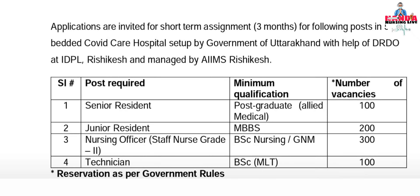There are many vacancies: Senior Residents require a postgraduate allied medical qualification, with 100 vacancies. Junior Residents require MBBS, with 200 vacancies. Nursing Officer or Staff Nurse Grade 2 requires BSc Nursing or GNM (General Nursing and Midwifery), with a total of 300 vacancies.